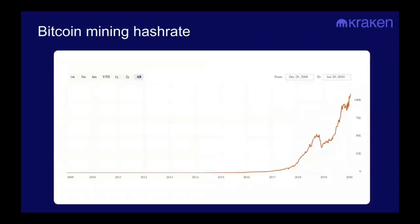Here's a graph of Bitcoin's mining hash rate. A few things go into why the hash rate has been increasing: hardware technology — ASICs, which are specialized pieces of computing hardware just for Bitcoin mining — miners finding less expensive sources of electricity like hydroelectric power, and the Bitcoin price going up. The higher the price, the more computational resources are put towards Bitcoin mining.